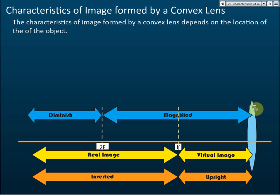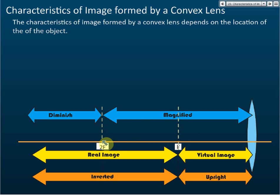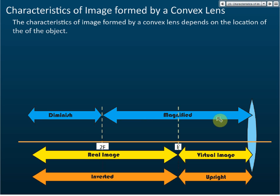For every lens there is a principal focus. In front of this lens, we divide it into three sections, using the principal focus F and two times the principal focus 2F as dividers. So we have two dividers: one here and another one here, giving us three sections. This chart summarizes the characteristics of the image.